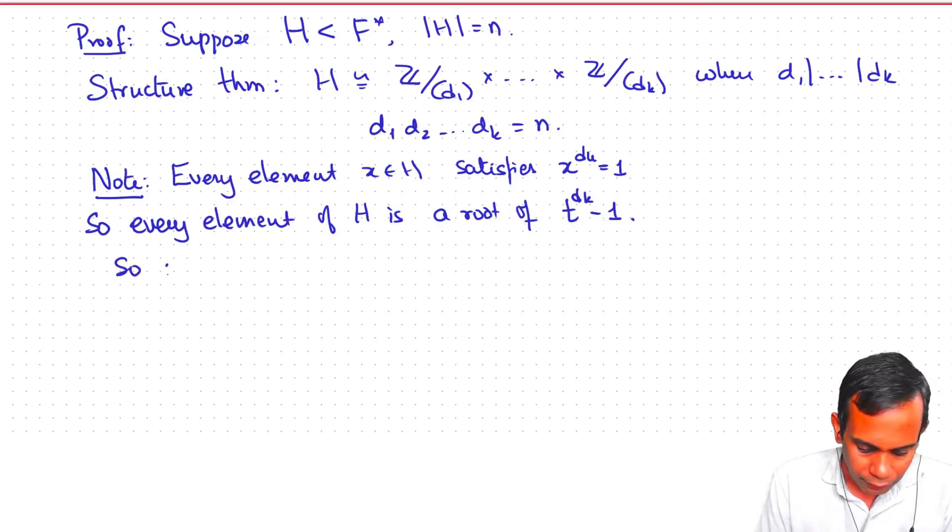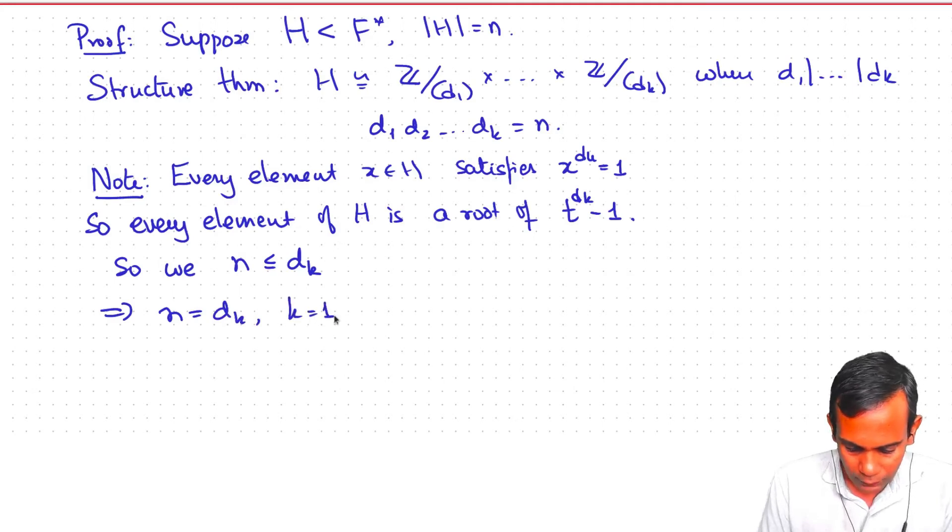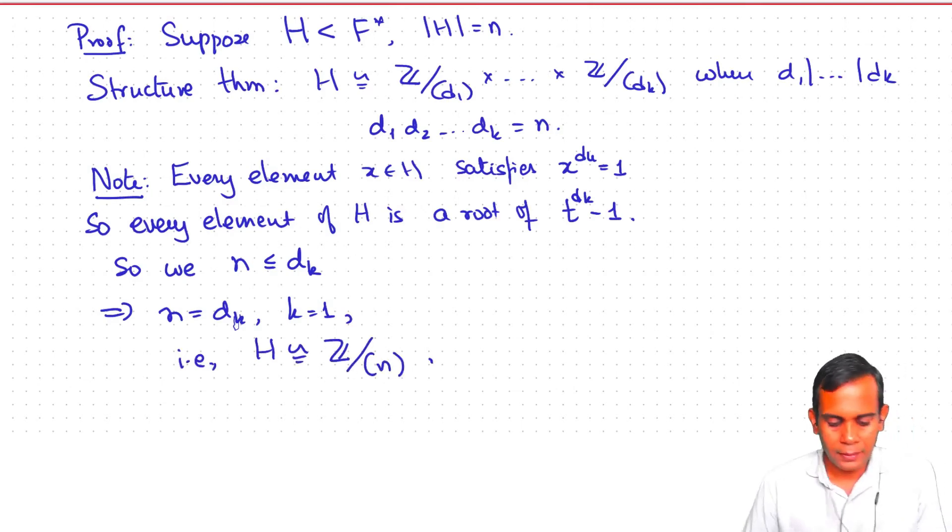And so, we have that n is less than or equal to dk. But this is only possible if n is equal to dk, and in fact k is equal to 1, or I would just say n is equal to d1. So, i.e., H is isomorphic to Z mod n.